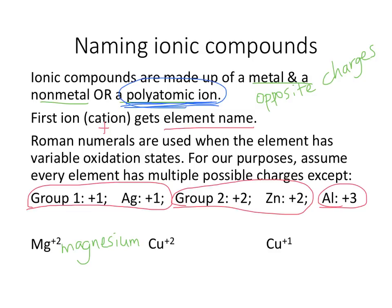Copper (+2) has got to be copper(II), because copper is not one of these exceptions. It's in the transition elements and it could have varying charges. For instance, it could be copper(+1), so that would be called copper(I).